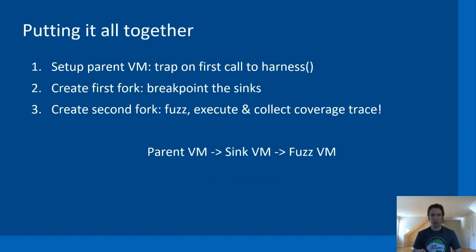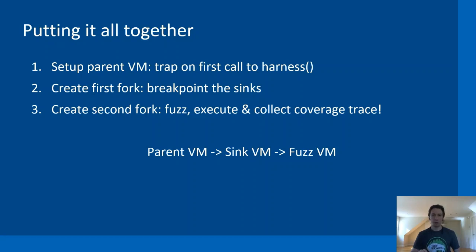Putting all of this together, the three steps to set up fuzzing are: first, set up the parent VM by trapping on the first call to the harness function; second, create a fork and breakpoint the sync points — the kernel internal handlers for events we want notified of; third, create a second fork from that first one, which we use for actual execution and collecting coverage trace.